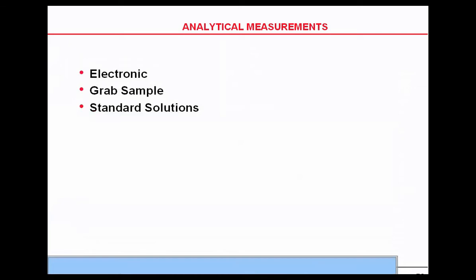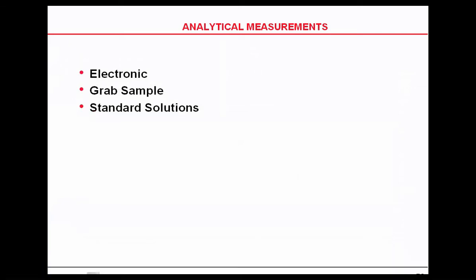Electronically, use a resistor for the grab sample. Use a standard solution of some known value. It's very difficult in a power plant to use something less than 10 or 15 microsiemens solution. The minute you open that cap, you contaminate it with CO2 and what's in the air, and that sample is no longer good to use. So you should use something higher than those very low bottles of conductivity solution.